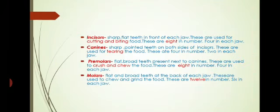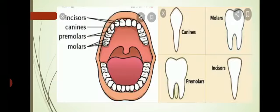Then second type is canines. These are also sharp but pointed. They are present on both sides of incisors. These are meant for tearing the food. There are 4 canines, 2 in each jaw. And children, do you know that carnivorous animals who eat flesh, their canines are very well developed and bigger in size to tear the flesh.